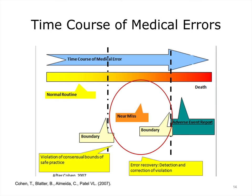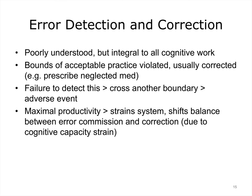Errors only happen when certain things happen before — the process approaches and exceeds the boundaries of normal practice, and then adverse events occur. Error detection and correction is poorly understood but essential to all cognitive work. Errors happen when the boundary of acceptable practice is violated. Usually this is corrected. An example is a medication not being prescribed at the right time; then this omission is detected and the medication is prescribed. If someone fails to detect the omission, this can lead to an adverse event, such as progression of a clinical condition to a dangerous point. At times of maximal productivity, the system may be strained, including the cognitive capacity of the system, which may mean there are not enough cognitive resources to detect and correct the error.